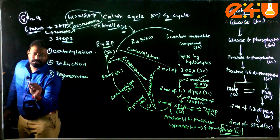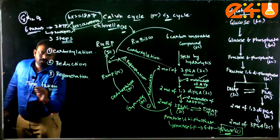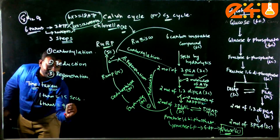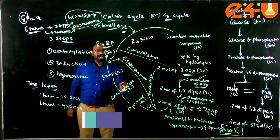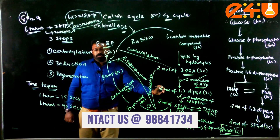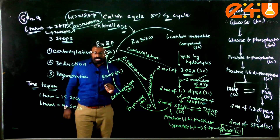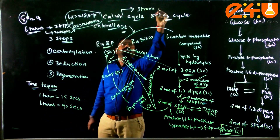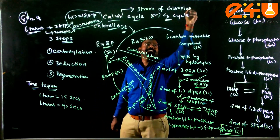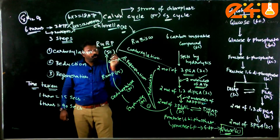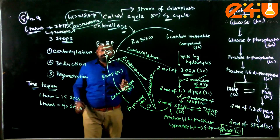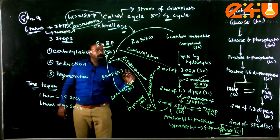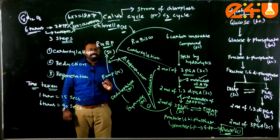The time taken to complete this pathway: 1 turn equals 15 seconds, so 6 turns equals 90 seconds — the total time taken to produce 1 molecule of glucose. This Calvin cycle majorly takes place in the stroma of the chloroplast. Since it comes under the dark reaction, it does not depend on light directly; it depends on the products of the light reaction — the assimilatory powers ATP and NADPH2 — both of which are utilized here to produce glucose.